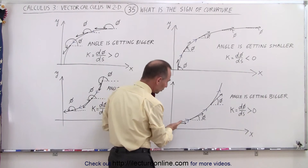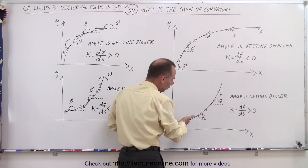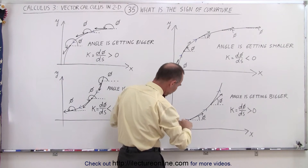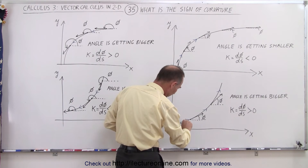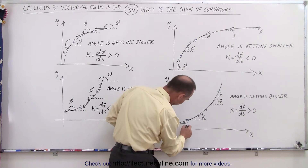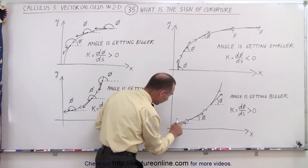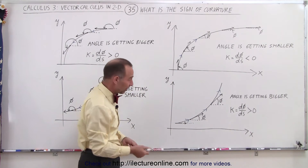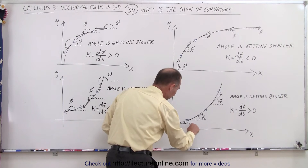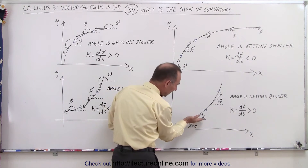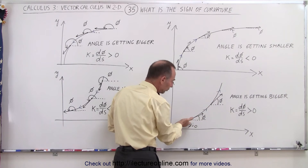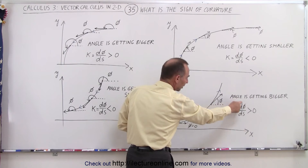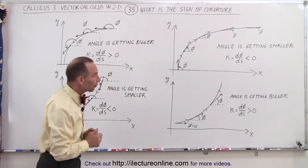Here, we're also traveling in this direction, but now the curve occurs in a different way. The angle between the positive x-axis and the unit tangent vector — it looks like they're pointing in the same direction, so the angle is zero there. Then here the angle is bigger, and bigger again. You notice that the angle is becoming bigger as we're traveling along the curve. Angles getting bigger mean that the curvature is a positive quantity.